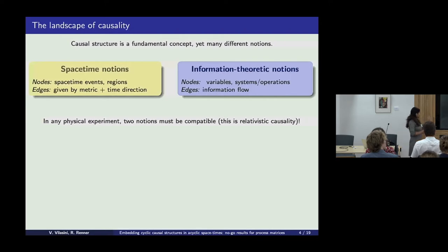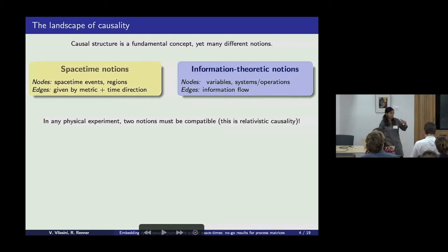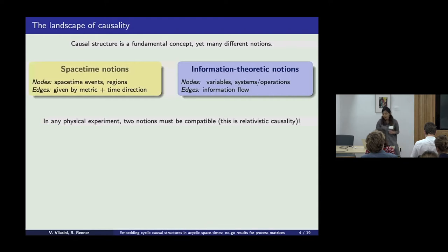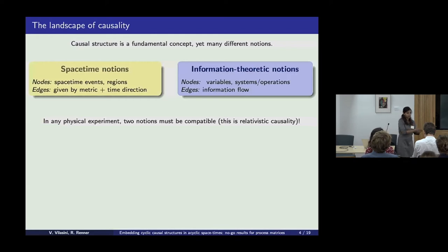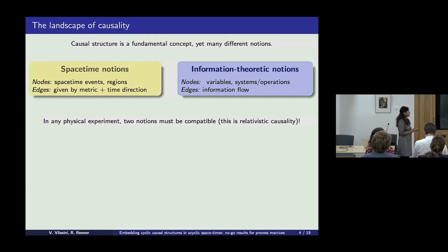Very broadly speaking, on the one hand, we tend to associate causality with the notion of spacetime. Here our causal structure would think of the nodes as typically being spacetime events or spacetime regions, and the edges are probably given by the metric along with some direction that you call time. On the other hand, we can define causality also in a purely information-theoretic manner without a priori referring to a spacetime, by considering as nodes variables or quantum systems or quantum operations, and the edges then capture the causal relations corresponding to information flow between these objects.